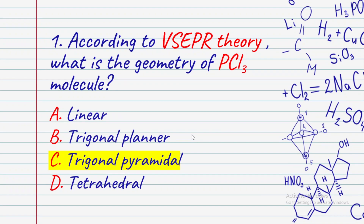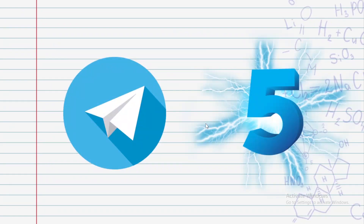So the answer is confirmed. Now, to summarize: memorize the word B-L-T-T-S. Two bond pairs → linear; three bond pairs → trigonal; four bond pairs → tetrahedral; five bond pairs → trigonal bipyramidal; six bond pairs → octahedral. Using VSEPR theory, these are the geometrical shapes. Practice exercises have been posted on Telegram — search and find them.